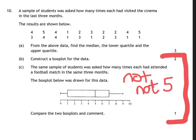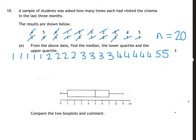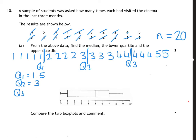Question 10 is quartiles. Write the 20 numbers in order. Split into two halves of 10 to find the median (Q2). Split each half of 5 to find Q1 and Q3. The lower quartile Q1 is 1.5, the median Q2 is 3, and the upper quartile Q3 is 4.